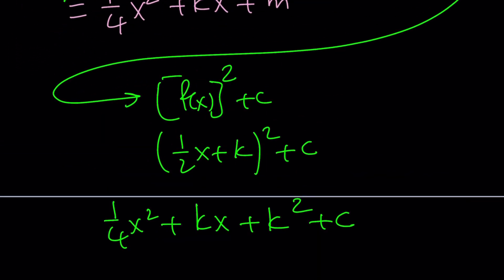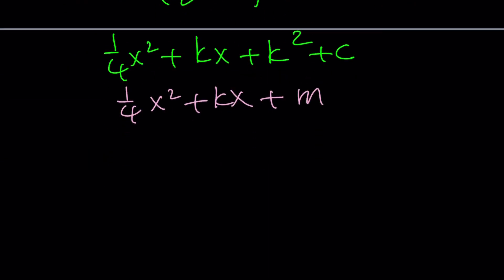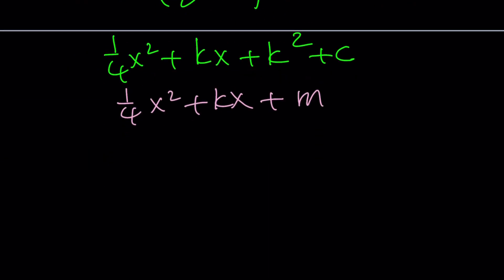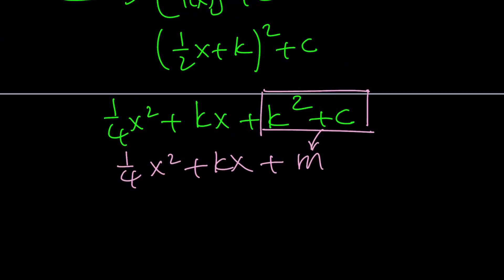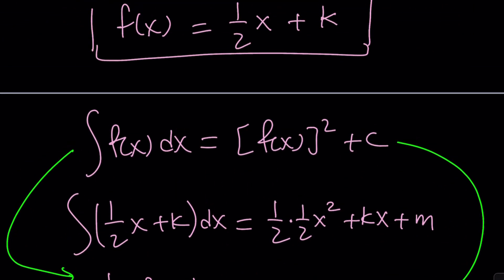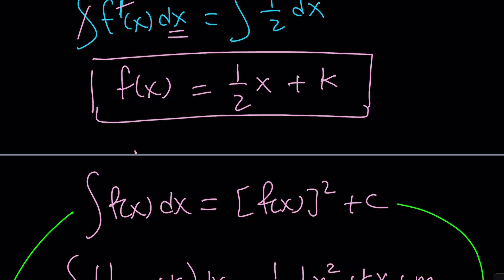Are these equivalent? The other one was 1 fourth of x squared plus kx plus m. Yes, they are the same as long as k squared plus c can be set equal to a constant, which is m. That can always be done because if k and c are constants, k squared plus c is also a constant. So our solution works. f(x) equals 1 half of x plus k. And obviously f(x) equals 0 for all x in the domain also works.